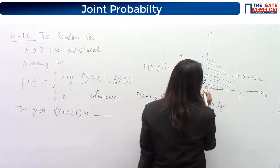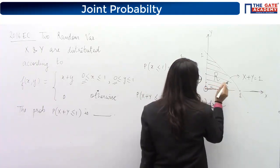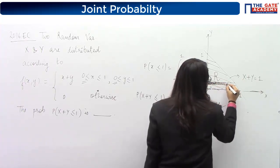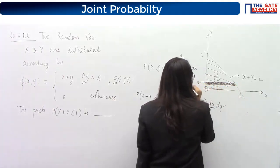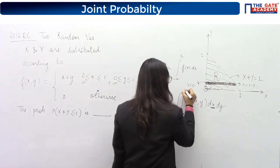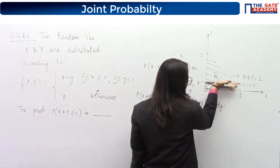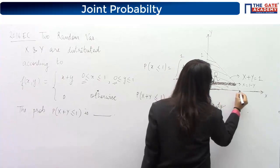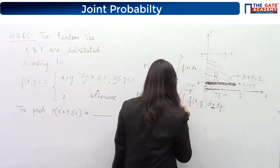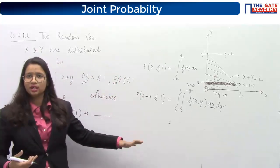To determine the limits: considering a vertical strip, X varies from 0 to (1 − Y) for a fixed Y. Y itself varies from 0 to 1, since the strip ranges from the bottom (Y=0) up to where it meets the line (Y=1). So the limits are: x from 0 to (1−y), and y from 0 to 1.